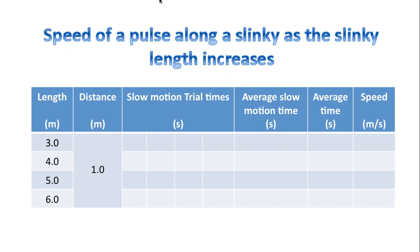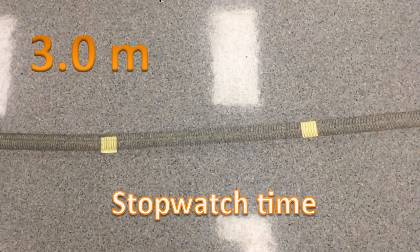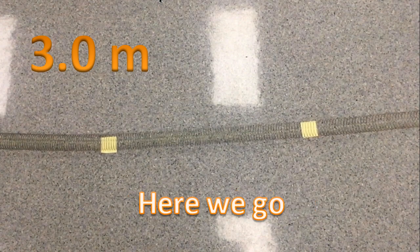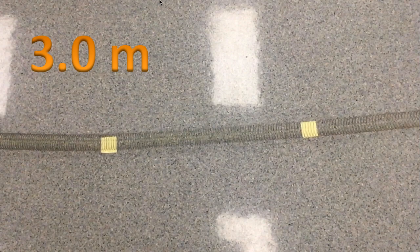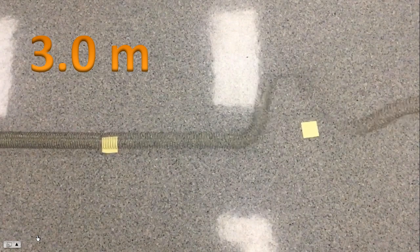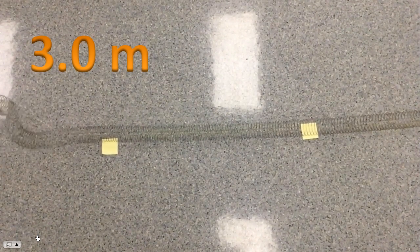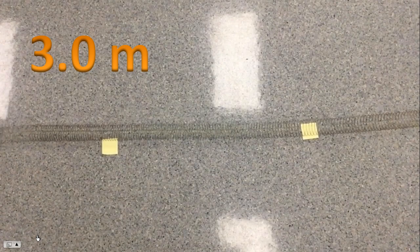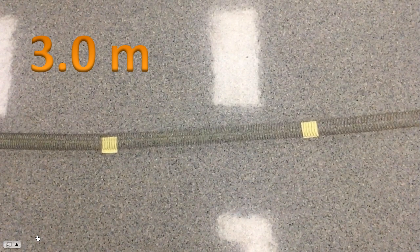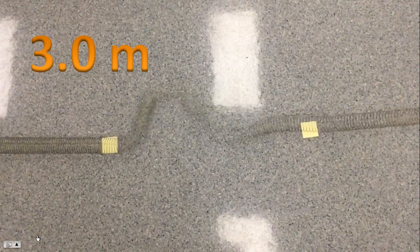Notice that for slow motion trial times you're recording the time on four different occasions. So let's get to it. Here is the information for when the slinky is stretched to three meters long. Take out your stopwatches, here we go. Start. Stop.